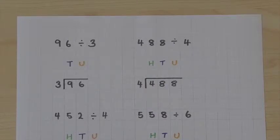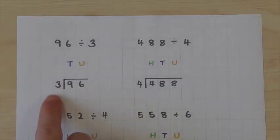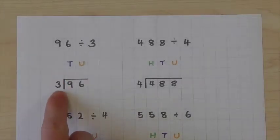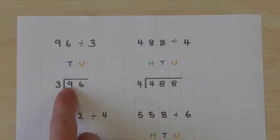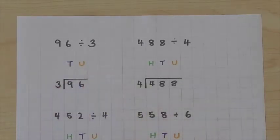Unlike some of the other calculations that you will be familiar with, we start our short divisions on the left hand side — in this case, in the tens column. We start on the left and work left to right.